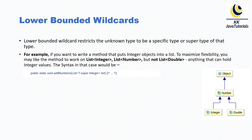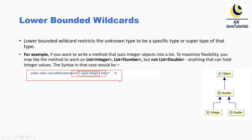For example, if you want to write a method that puts Integer objects into a list, to maximize flexibility you may want the method to work on List of Integer and List of Number, but it should not work on List of Double, List of Short, List of Character, or anything that cannot hold Integer values. The syntax of such a method would pass a parameter like List with question mark super Integer, so this method can accept List of Integer and List of Number, since Number is a supertype of Integer.